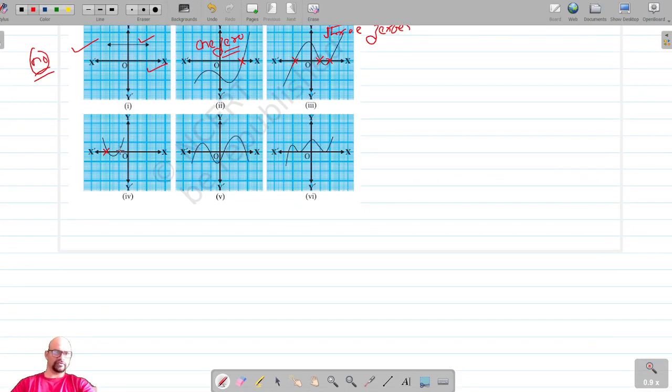For the fourth graph, the polynomial intersects the x-axis at two points, so we have two zeros. Now in this case, the graph intersects the x-axis at one, two, three, and four points.